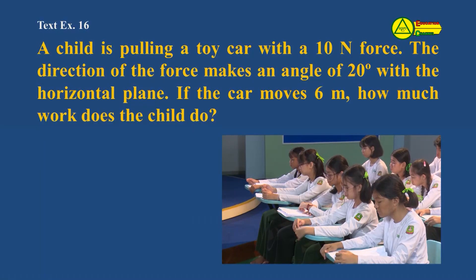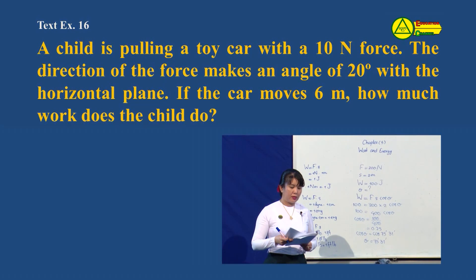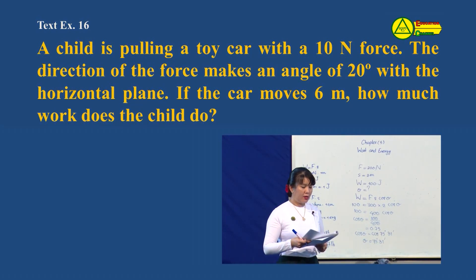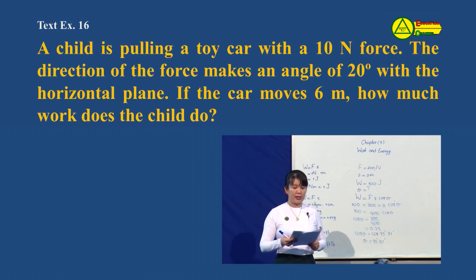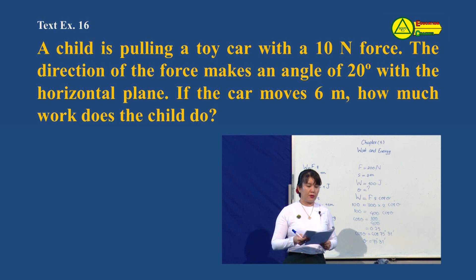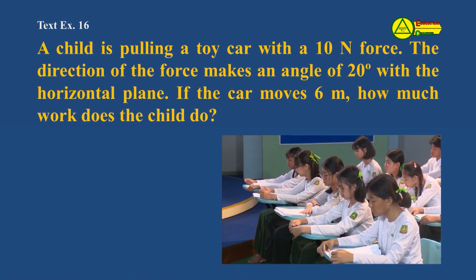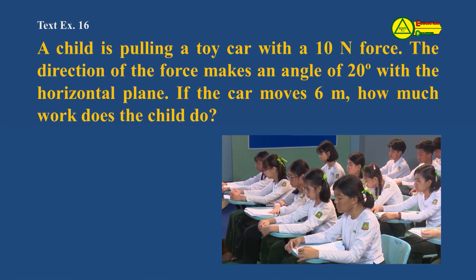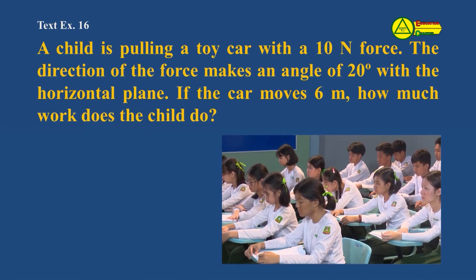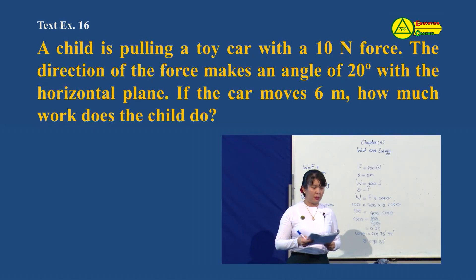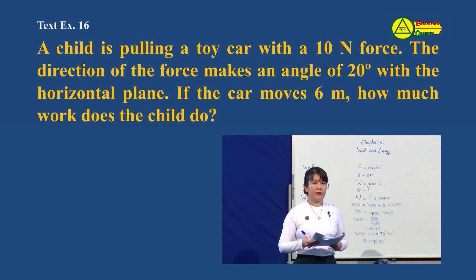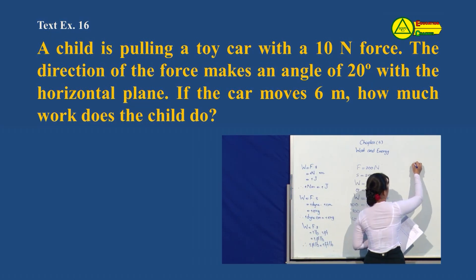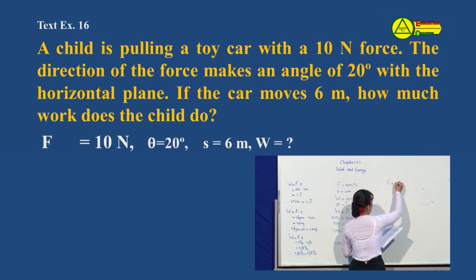Now let's go to slide number 60. A chain is pulling a car with a 10 N force. The direction of the force makes an angle of 20 degrees with the horizontal. If the car moves 6 meters, what work does the chain do? F equals 10 N, θ equals 20 degrees, s equals 6 meters. So W equals Fs cos θ equals 10 times 6 times cos 20 degrees.